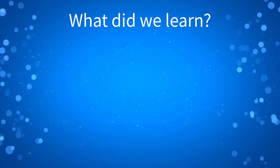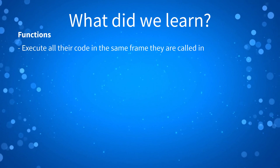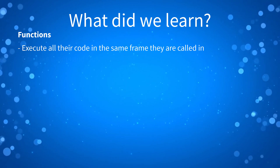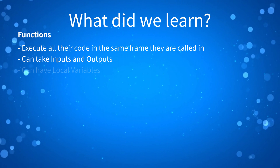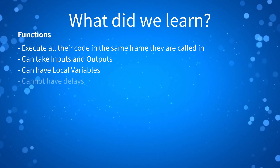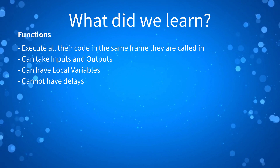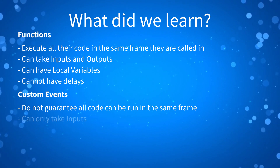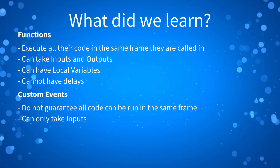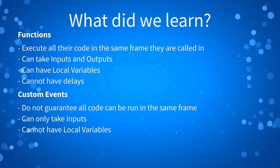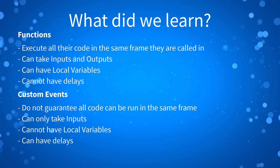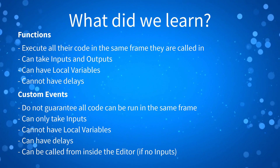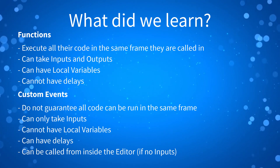Let's do a quick recap. Functions execute all code in the same frame they are called. Functions can take inputs and outputs. Functions can have local variables. And functions cannot have delays. Events do not guarantee that all the code can be run in the same frame. Events can only take inputs. Events cannot have local variables. However, events can have delays and can be called from inside the editor. We haven't covered delays yet, but that will be covered in the next lesson.